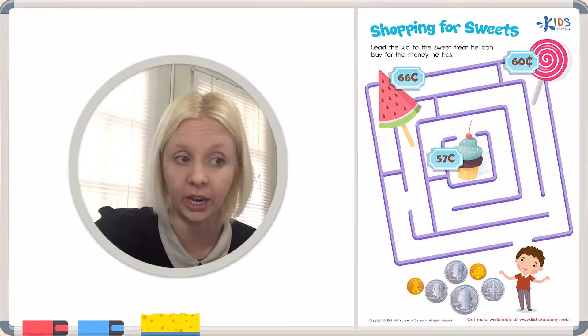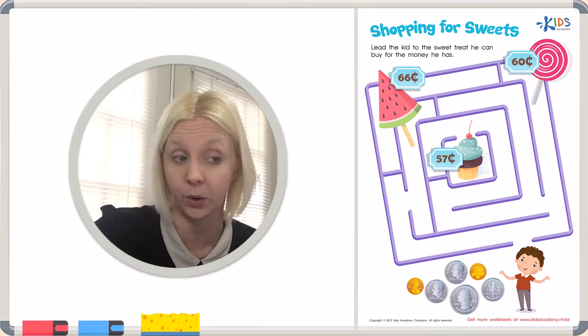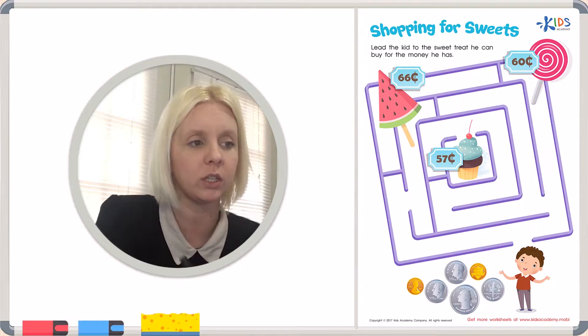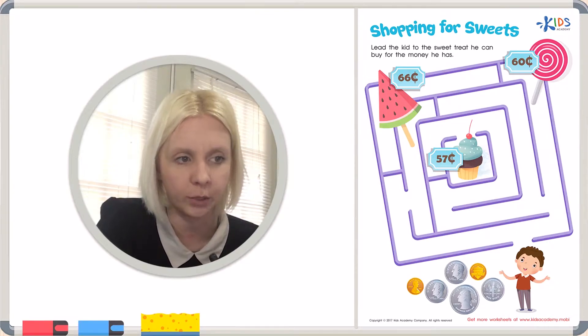First, we have to take a look at our kid and figure out how much money he has to know which direction we're going, which sweet treat can we buy today. So let's come over to the side and let's write out how much money he has.